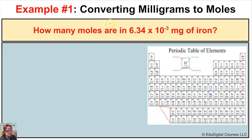In this first example it says: how many moles are in 6.34 times 10 to the negative third milligrams of iron?